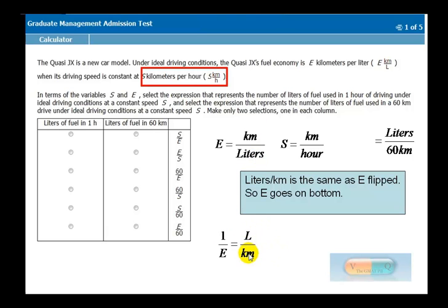And how do you get from liters per kilometer, how do you take care of this 60? So you made it pretty much look the same. It's 1 over E. The only difference is, how do you get that 60 in there?